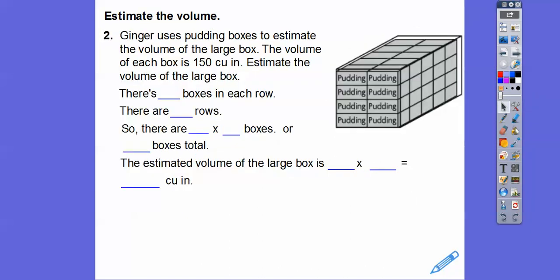How about this one? Ginger uses pudding boxes to estimate the volume of the large box. The volume of each pudding box is 150 cubic inches. So estimate the volume of the whole box. How many boxes are in each row? I'm going to count them up: 1, 2, 3, 4, plus another 4, so there's 8 boxes in each row.